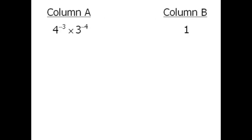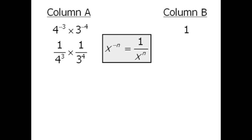To evaluate column A, we'll use the following rule. 4 to the power of negative 3 will equal 1 over 4 to the power of 3, and 3 to the power of negative 4 will equal 1 over 3 to the power of 4.